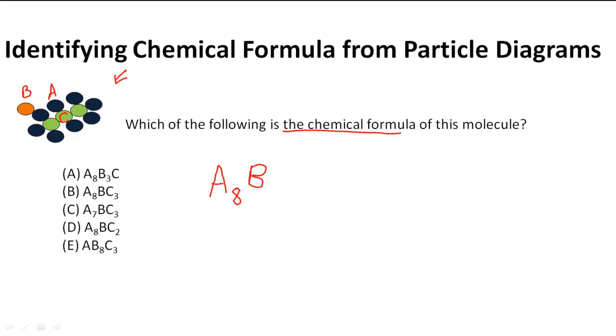Now let's find out how many C's we have. One, two, three C's. So it's actually going to be B and then C with a subscript of three.